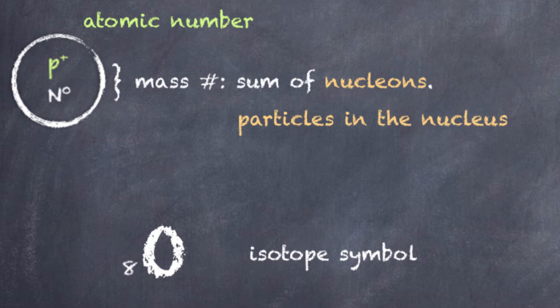If we're taking a look at the total number of nucleons, we have eight protons and eight neutrons in the most common version or isotope of oxygen. So, that gives us a total mass number of 16. And so, you can see here that this is our representation or our isotope symbol of oxygen.